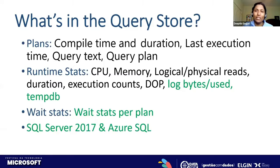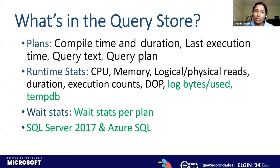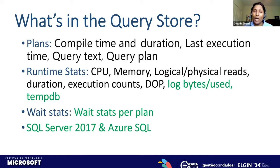What's stored inside Query Store apart from execution plans? The plans themselves get stored — query text, query plan, compile time, duration, last execution time — all stored in the database internal tables. It also saves runtime stats: CPU, memory, logical reads, physical reads, duration, execution counts, degree of parallelism, log bytes used, tempDB, and wait stats per plan.